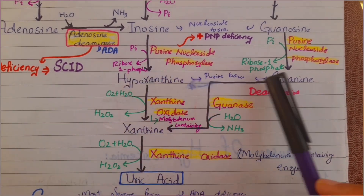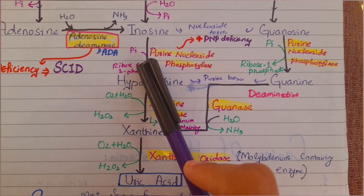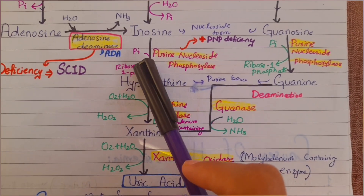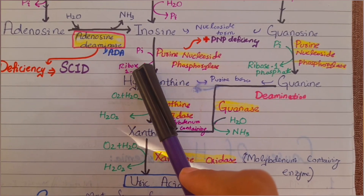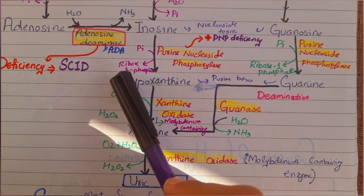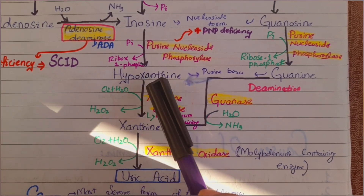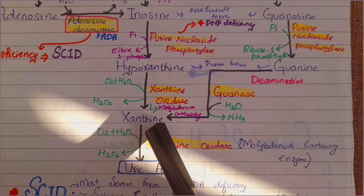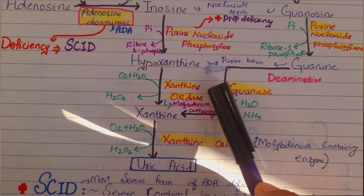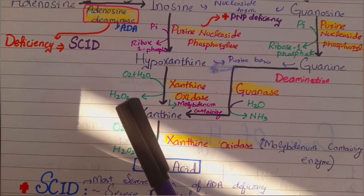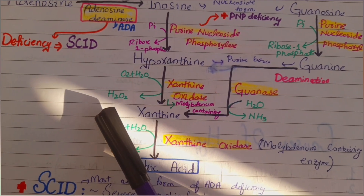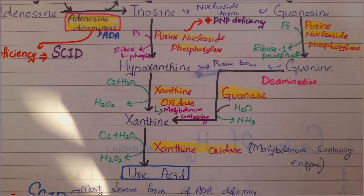The conversion of inosine and guanosine to hypoxanthine and guanine occurs in the presence of the enzyme purine nucleoside phosphorylase. The phosphate group is transferred to the ribose sugar to form ribose-1-phosphate, which is released. Hypoxanthine is then further oxidized to form xanthine in the presence of xanthine oxidase, a molybdenum-containing enzyme, utilizing oxygen and water while releasing hydrogen peroxide.